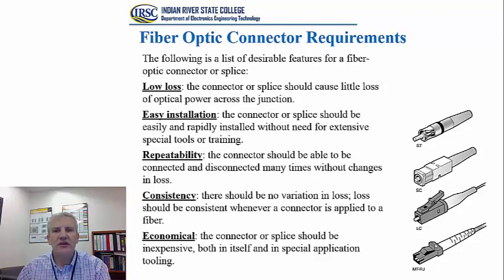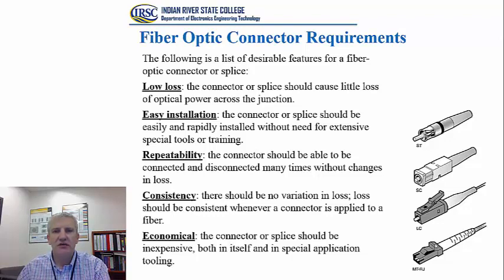What are the main connector requirements? There are a few desirable features each fiber optic connector should have. Number one: low loss — the connector should cause little loss of optical power across the junction. On the previous slide, we mentioned that the loss in a pair of mated connectors should be a maximum of 0.75 dB. The second requirement is easy installation — the connector should be rapidly installed without need for extensive special tools or training. We will later discuss different ways of installing a connector onto bare optical fiber.